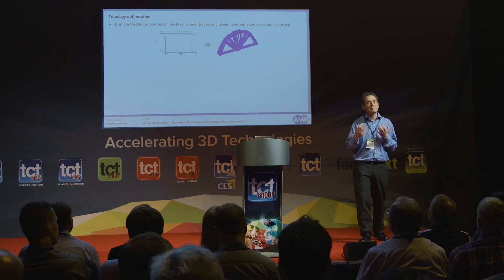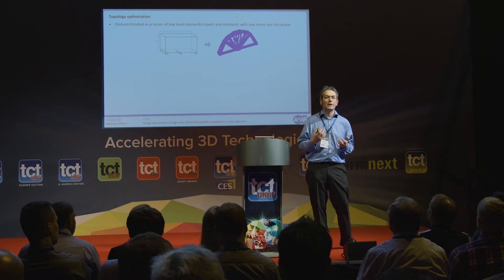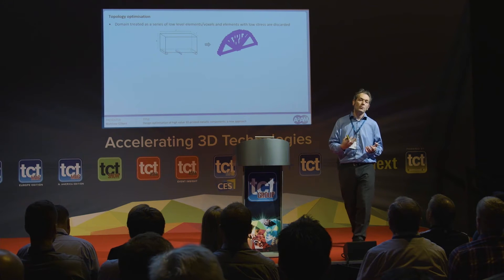Before I get into the details of the new approach, just for those of you not familiar with the area, I'll say a few words about the traditional approach people have tended to adopt when looking for new forms to additively manufacture. The main technique has been something called topology optimization. Basically, if you have a design space and don't know what the best form is, you mesh that with a finite element mesh — in 3D, a voxelated mesh — and then in simplistic terms you remove low stress elements to reveal the optimized form.